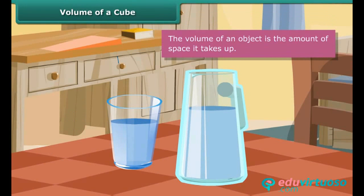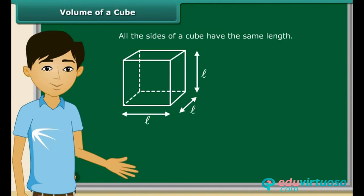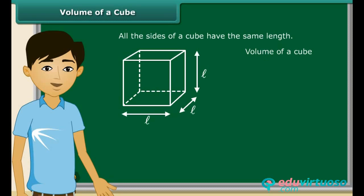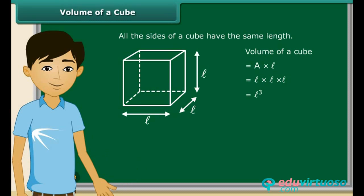The volume of an object is the amount of space it takes up. As we know, all the sides of a cube have the same length. Suppose this cube has length L. To find the volume of the cube, we multiply the area A with L. By multiplying three L's together we get L cube. Therefore, the formula for volume is V equals L cube.